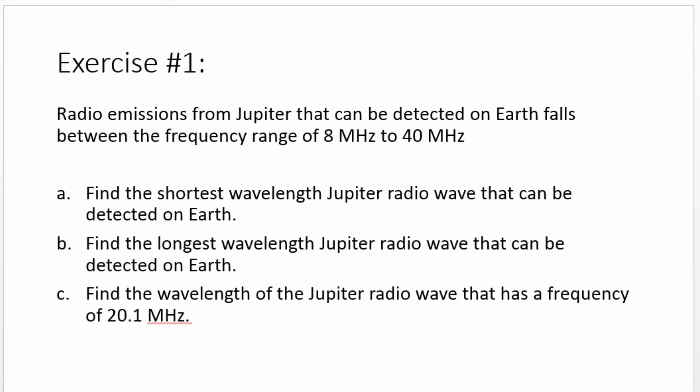We have an exercise: radio emissions from Jupiter that can be detected on Earth fall between the frequency range of 8 MHz to 40 MHz. We have three unknowns to find. Letter A: find the shortest wavelength Jupiter radio wave that can be detected on Earth. Letter B: find the longest wavelength. Letter C: find the wavelength of the Jupiter radio wave that has a frequency of 20.1 MHz.